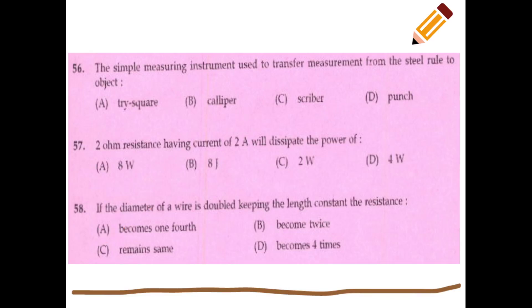A symbol measuring instrument used to transfer measurement from a steel rule to an object is called an odd-leg caliper or transfer instrument.